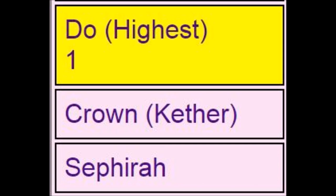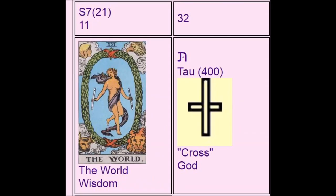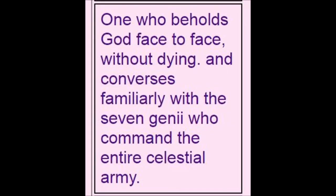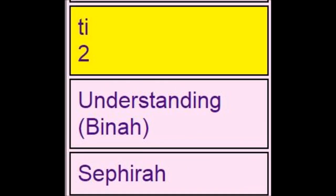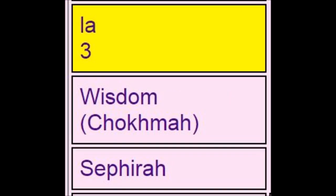Beginning at Do — the highest point, which is Crown, Kether, the first sephirah on the Kabbalah — below S7 is the World card. It is derived from the last letter of the Hebrew alphabet, Tau, and is a picture of the cross, which is an important symbol to Christianity and to the Egyptian myth. The description of that card is 'one who beholds God face to face without dying and converses familiarly with the seven genii who command the entire celestial army.' Below this are the two other sephiroth: Ti — Understanding, Binah; and La — Wisdom, Chokmah.